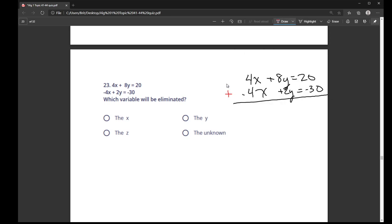Now remember, if I add these, what they mean by elimination is they mean which ones will cancel out. So here, 4x plus negative 4x, that equals 0. And so my x's here will be eliminated.